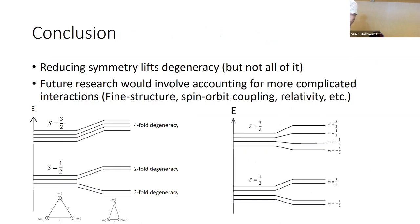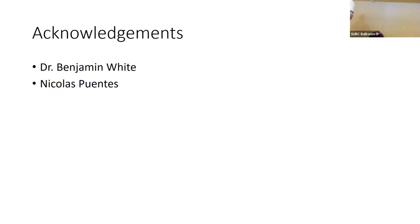Applying a Z-direction magnetic field to the isotropic system adds three terms related to the Z-components of each spin interacting with the magnetic field. The four spin three-halves states all end up with different energies — degeneracy is fully lifted, split by different values of the Z-component of spin. The spin one-half states still split into two sets with the same energy each. We conclude that reducing symmetry in general will lift degeneracy, but not always all of it. Future research could look into different types of symmetry breaking, such as fine structure, spin-orbit coupling, or relativistic effects, to see how those would affect the system.